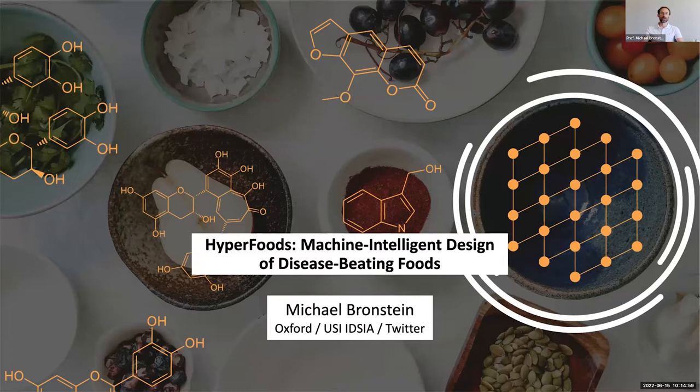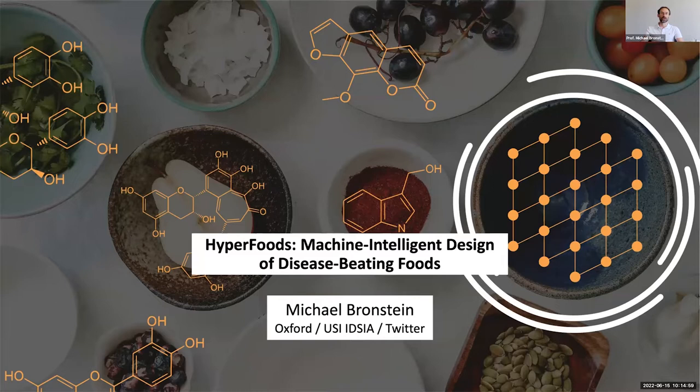Basically, how to design disease-beating nutrition using machine learning and artificial intelligence. You're experts in clinical trials and you know that in recent decades we've experienced a massive growth of chronic diseases, including cancer, diabetes, and heart disease. One of the reasons is that our population is rapidly aging, so the problem is getting worse. It has huge impacts on the cost of healthcare.